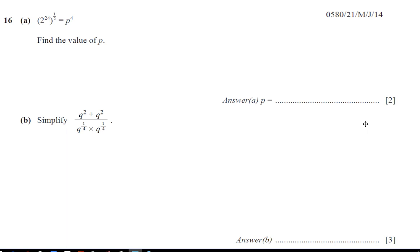We have question number 16 from Summer 2014, Paper 2, Variant 1. In this question, we've got a question to do with indices. It says 2 to the power of 24, to the power of a half, equals p to the power of 4.